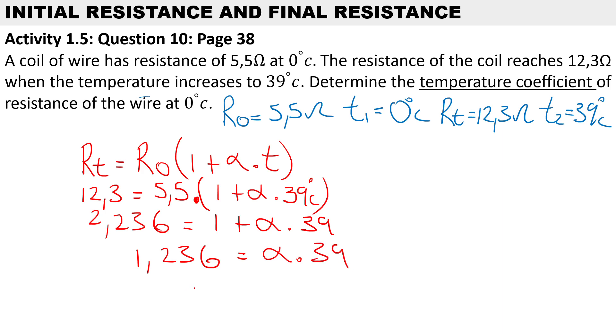get the temperature coefficient on its own, we will say 1.236 divided by 39. So therefore, the temperature coefficient α will be 0.0317 per degrees Celsius.